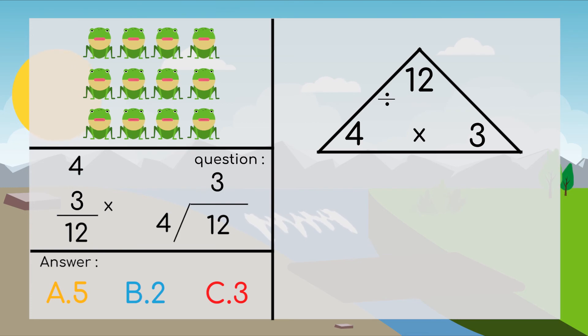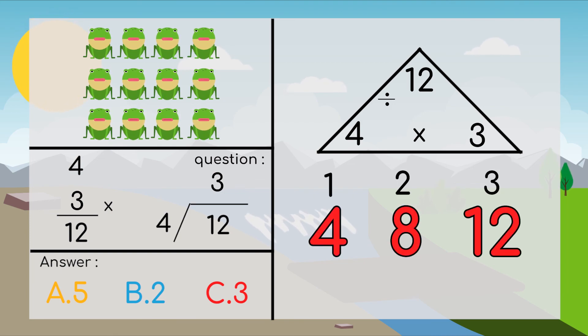But how about our division problem? Is 12 divided by 4 equal to 3? Do you still remember how many times we skip count? Yes, it's 3 times. So 12 divided by 4 is 3. Let's check our correct answer, which is 3.